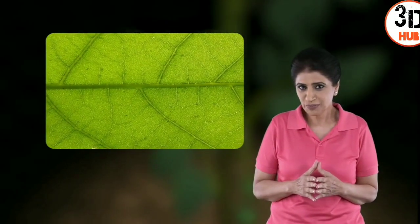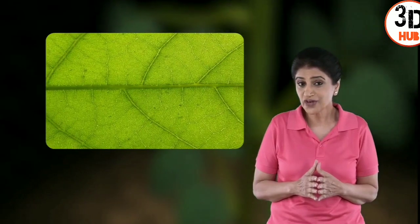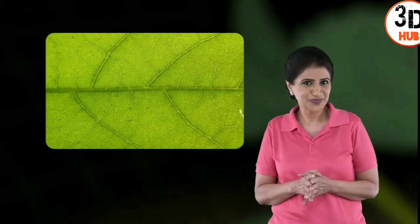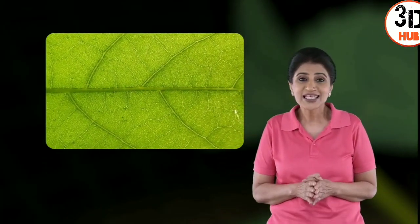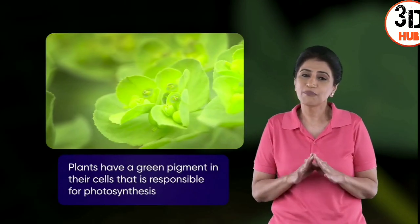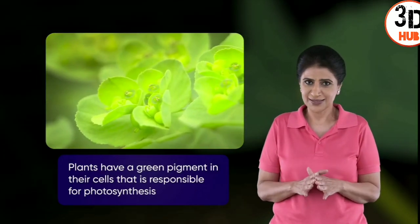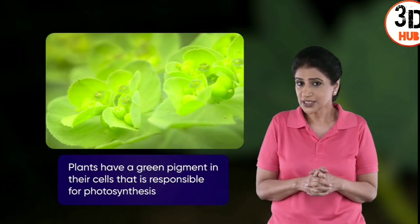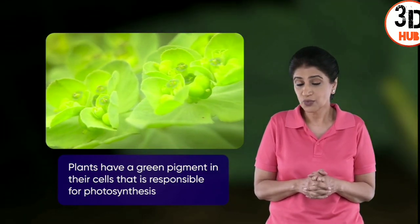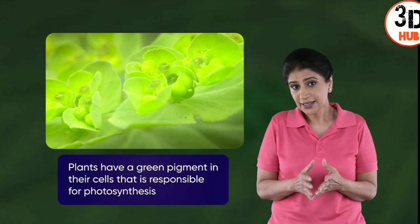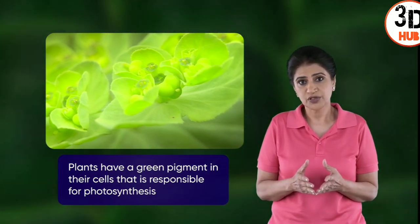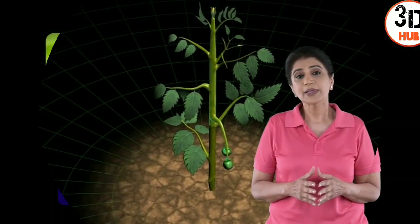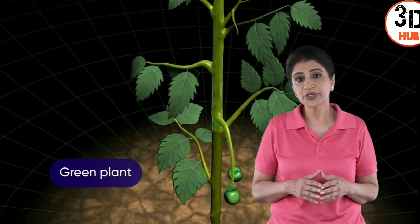Which color comes to your mind when you think of plants? Green — this color is basically all about the functioning of plants. Photosynthesis is important: without it, plants will die, and so will the herbivores, followed by carnivores and omnivores.